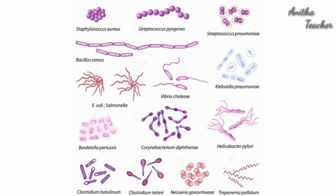Bacteria are found everywhere. They are found in soil, water, air, and inside living organisms — they are omnipresent. They also occur in a variety of foods. They can withstand extreme cold, heat, and harsh conditions. They are thus found in unexpected media like arctic snow, volcanic ash, hot water, and sulfur springs. In terms of sheer numbers, they greatly exceed every other group of organism on the planet.